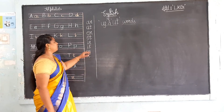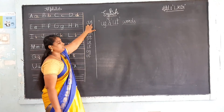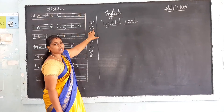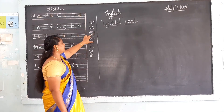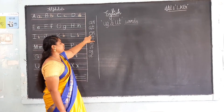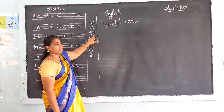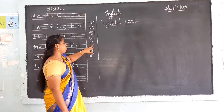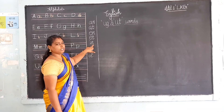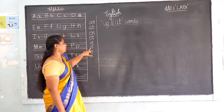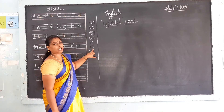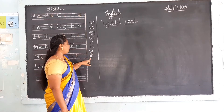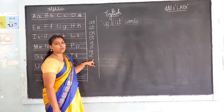Already we have learned: A, N — AN. A, T — AT. E, N — EN. A, T — AT. E, N — IN. E, T — IT. O, G — OG. O, T — OT.